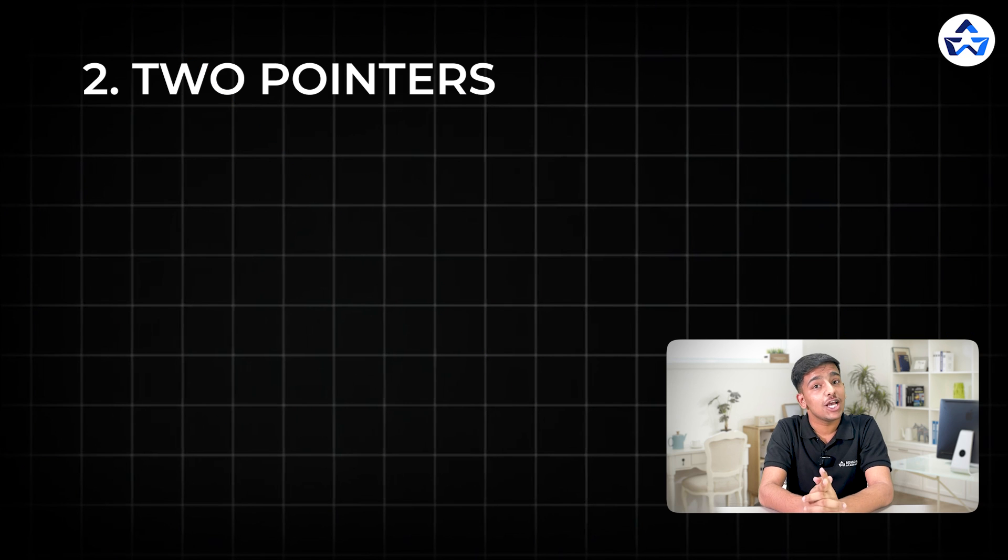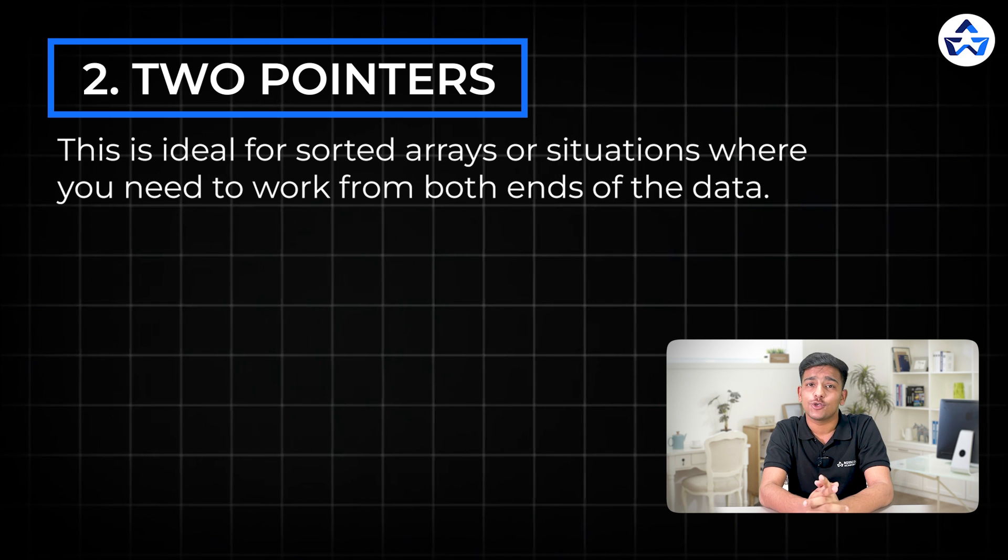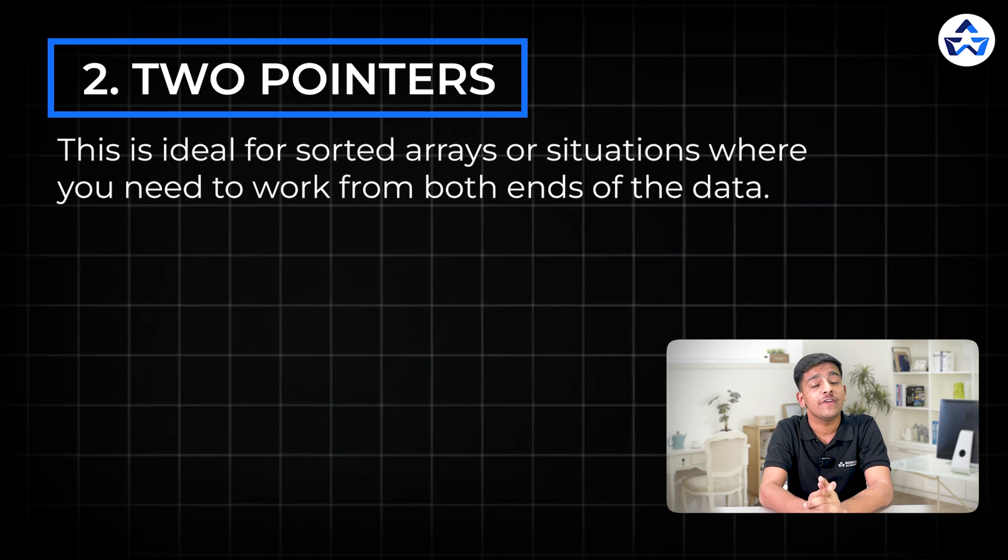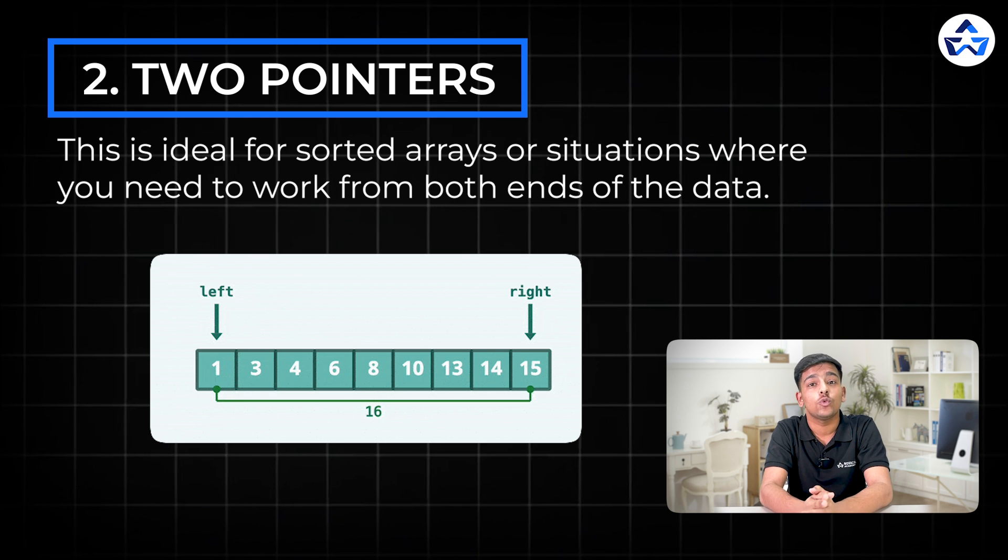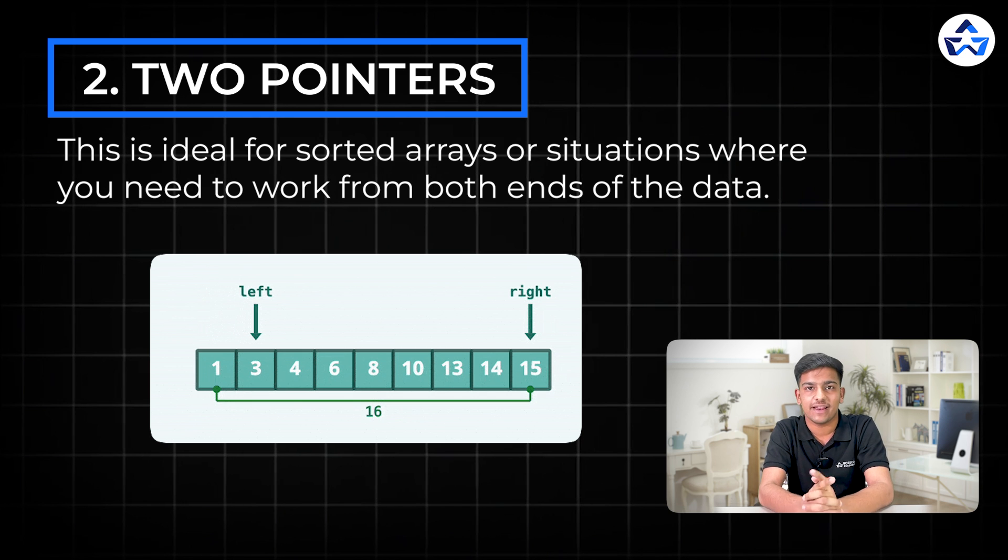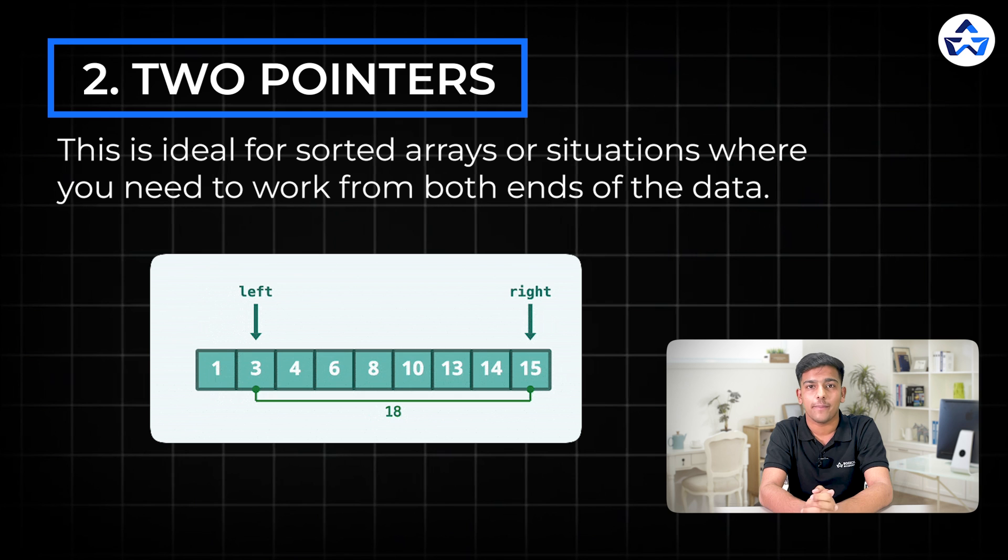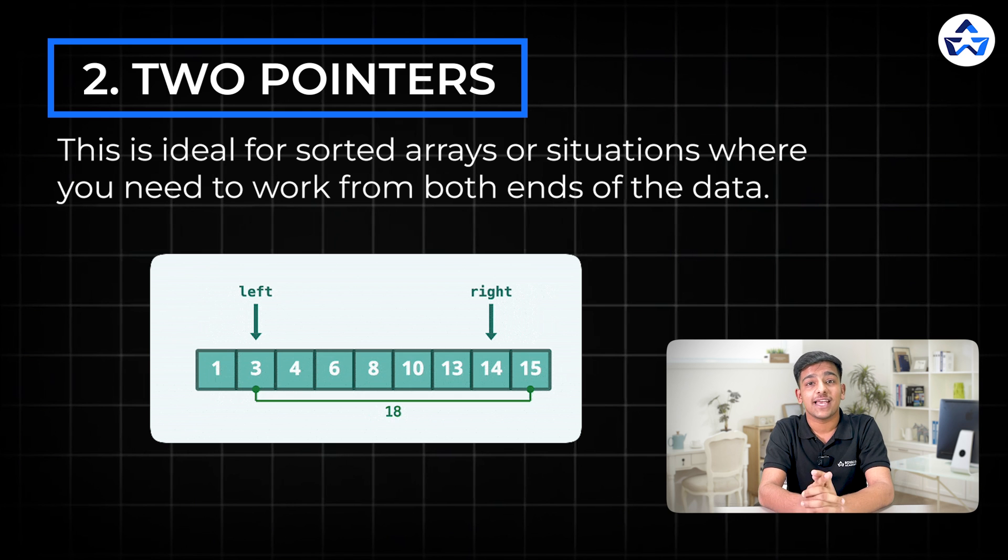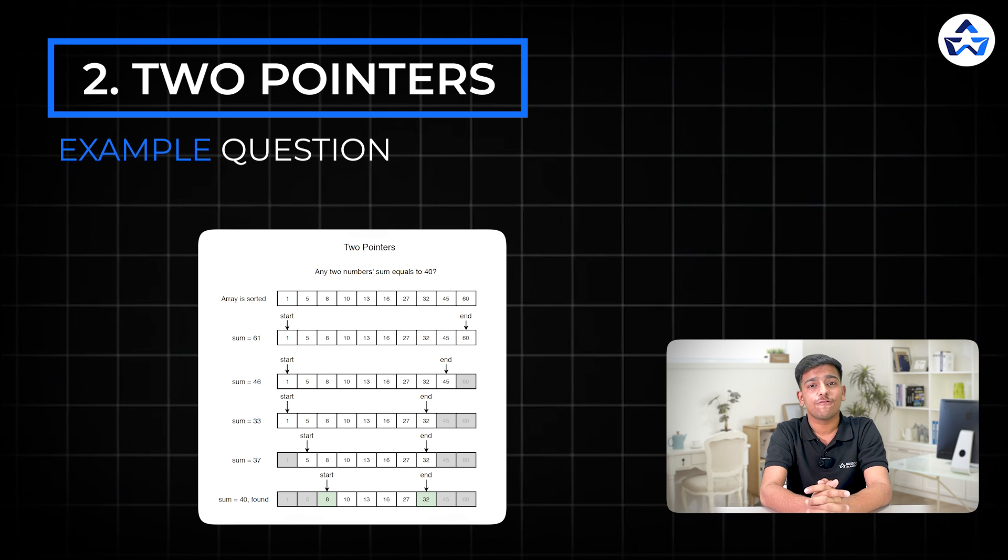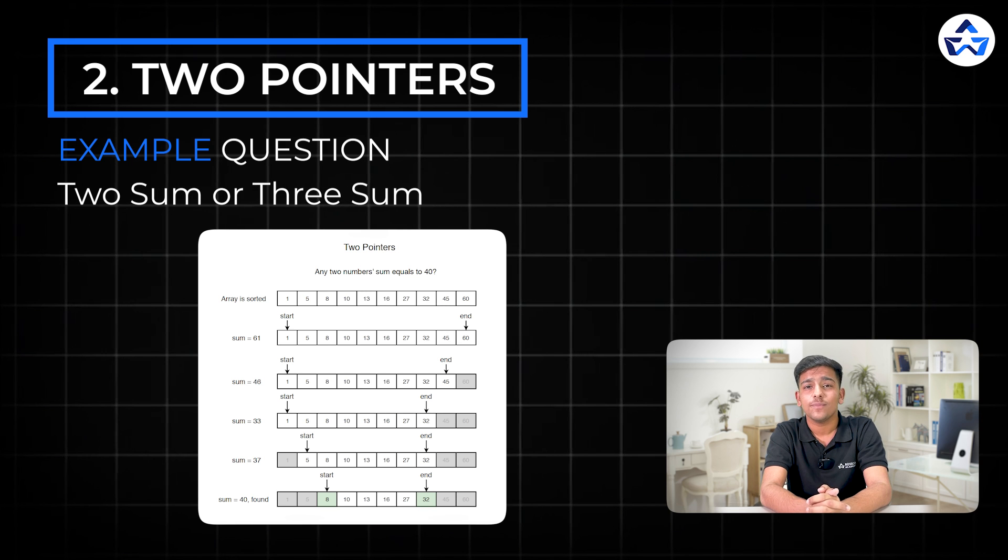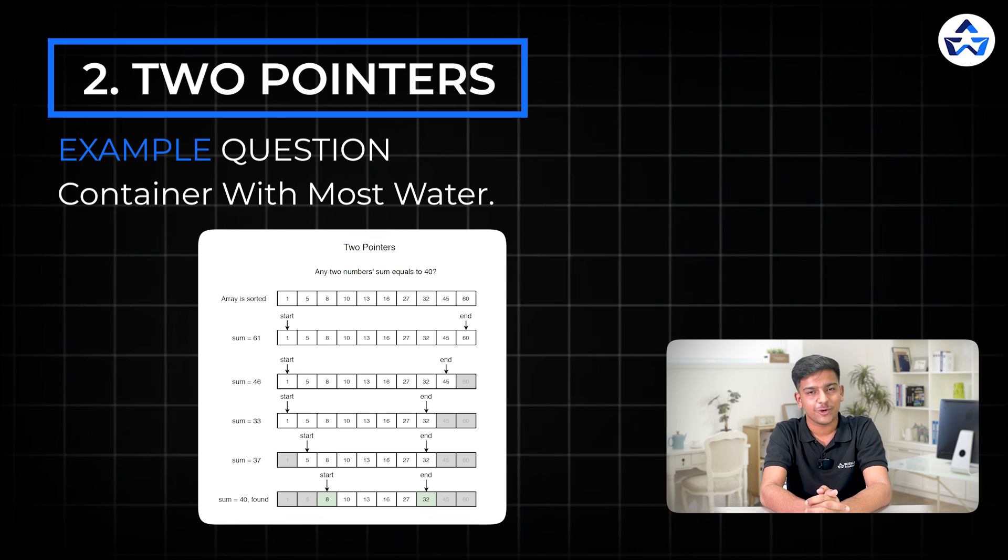So the next pattern is two pointers. This is ideal for sorted arrays or situations where you need to work from both ends of the data. Just remember two pointers either move towards each other or in the same direction depending on the problem's requirement and they drastically reduce the time complexity compared to the brute force approach. Example questions for two pointers are two sum or three sum and container with most water.